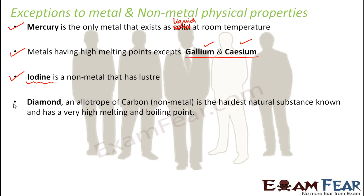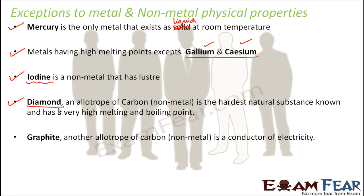Diamond, an allotrope of carbon, is the hardest natural substance known and has a very high melting and boiling point. Normally metals are hard and nonmetals are soft, but diamond is an exception — it is harder than all the metals we have discussed. Additionally, we say metals have high melting points, but diamond, even though a nonmetal, also has a high melting point. So diamond appears in the exception list for two properties.